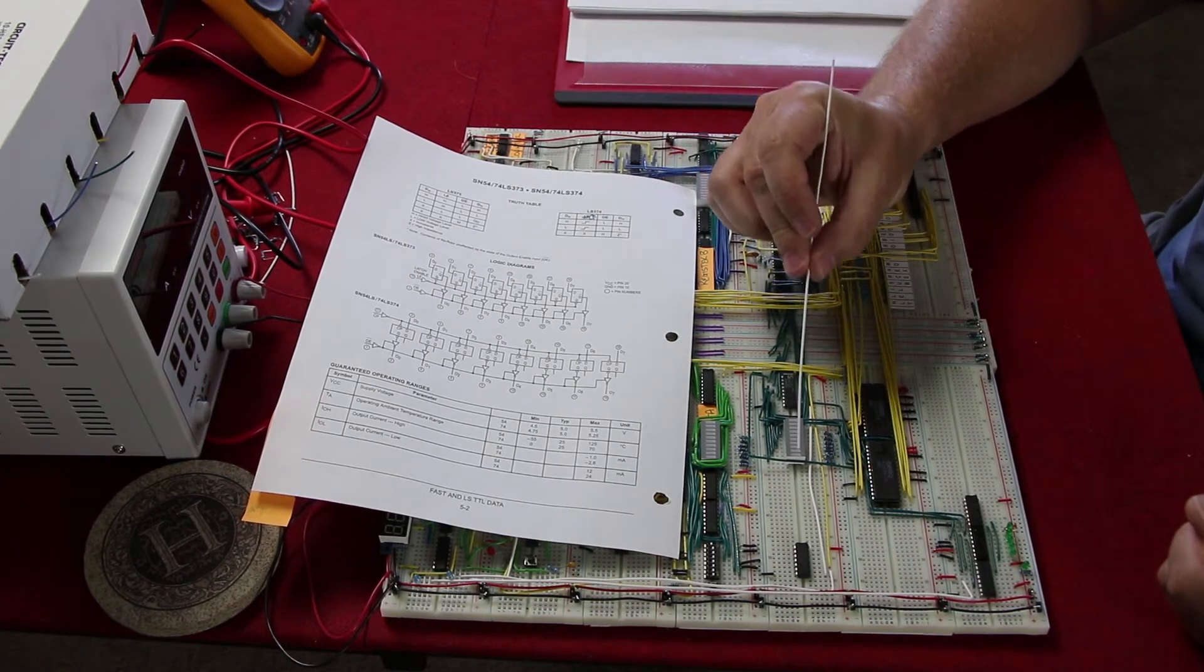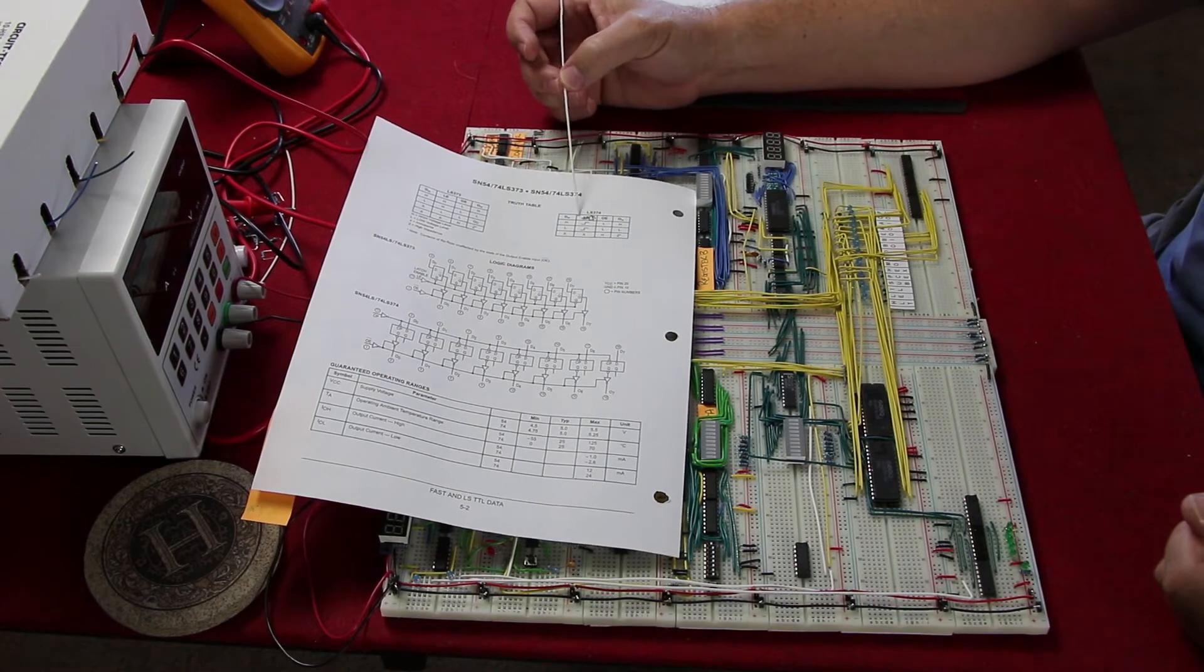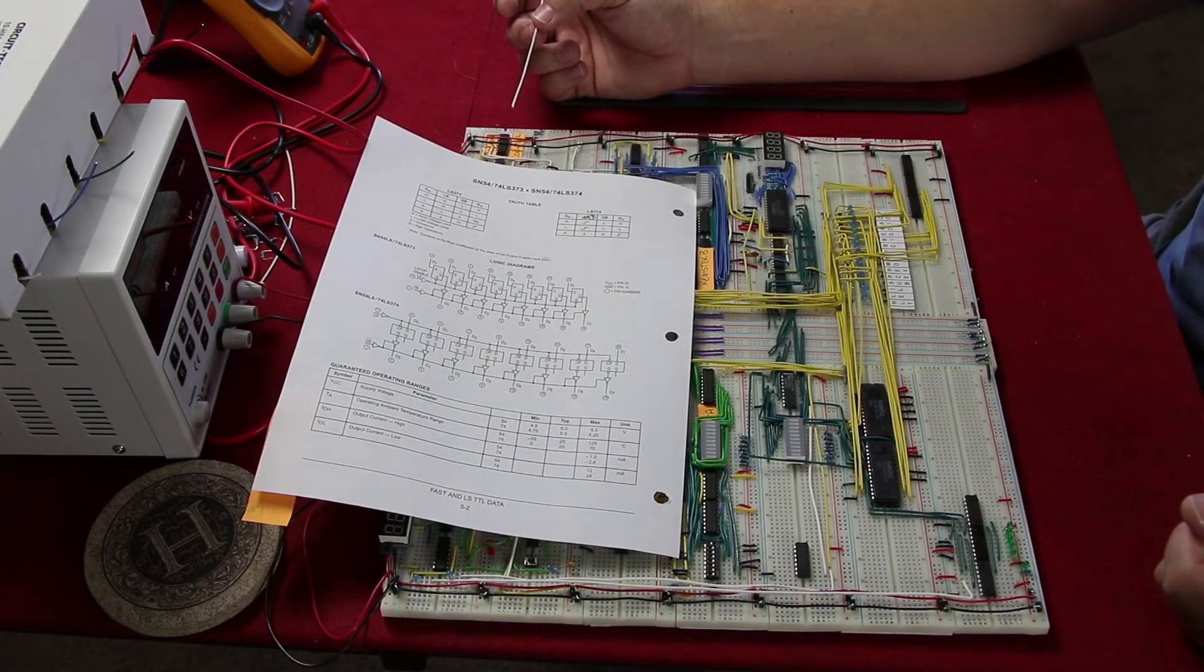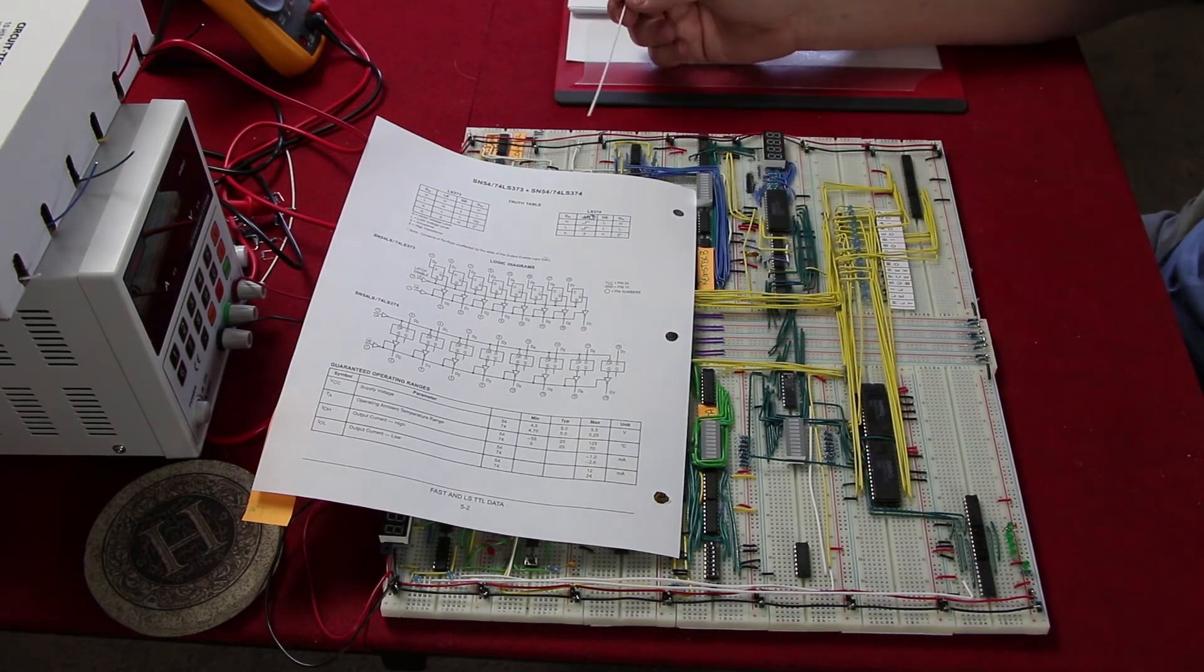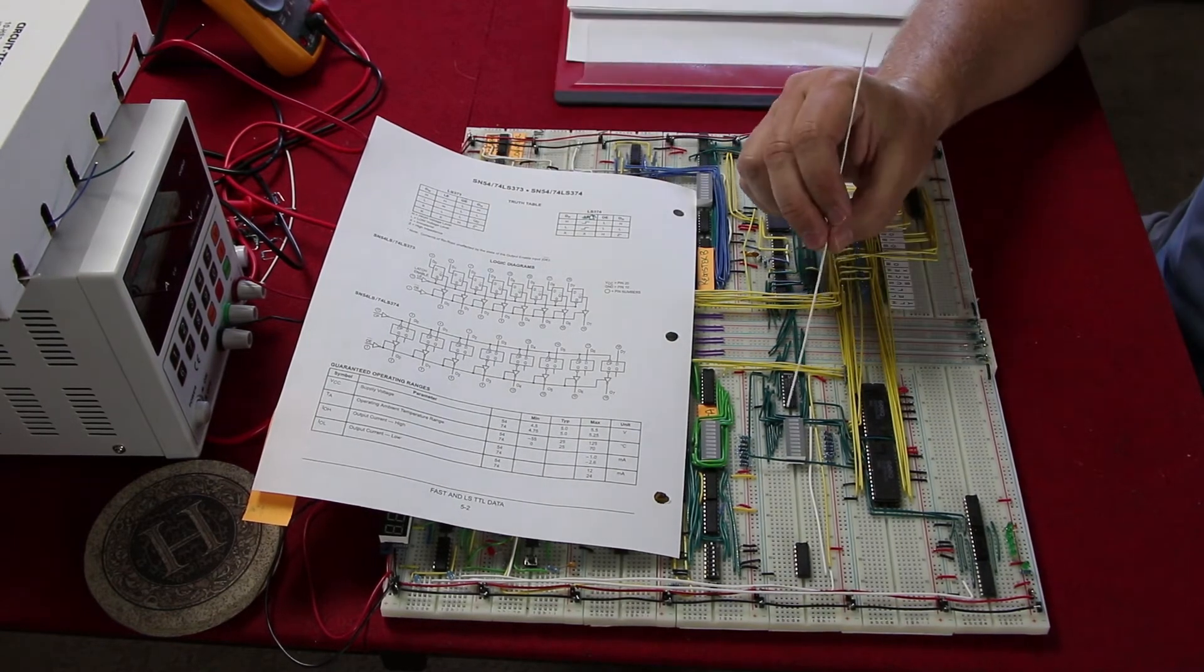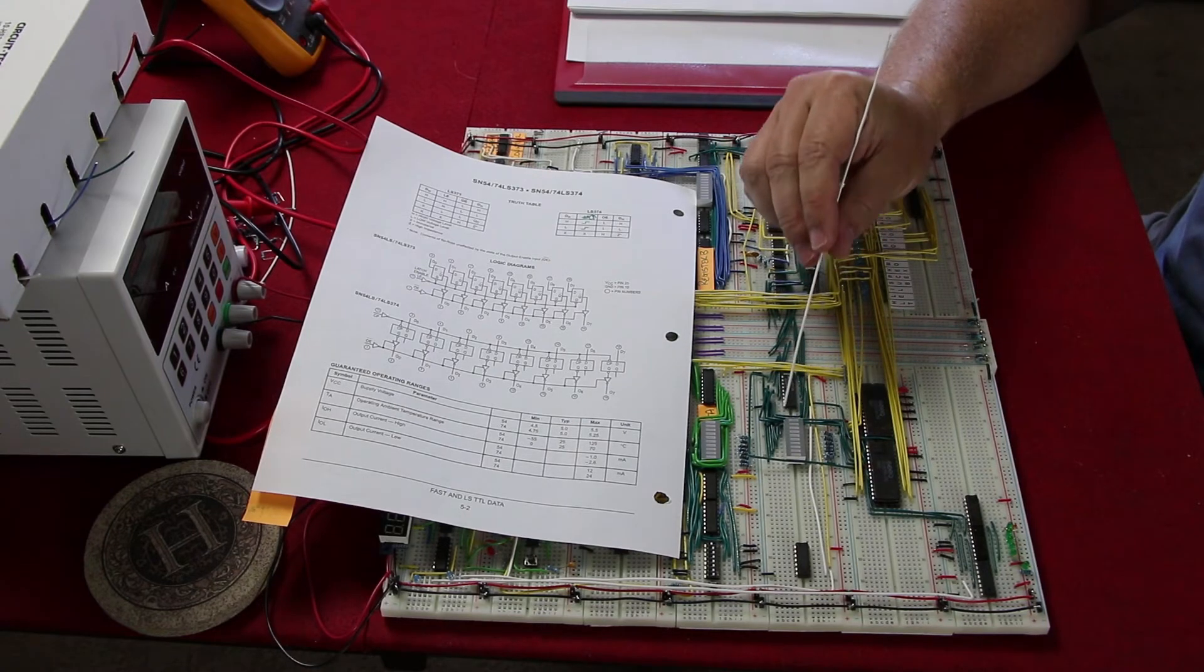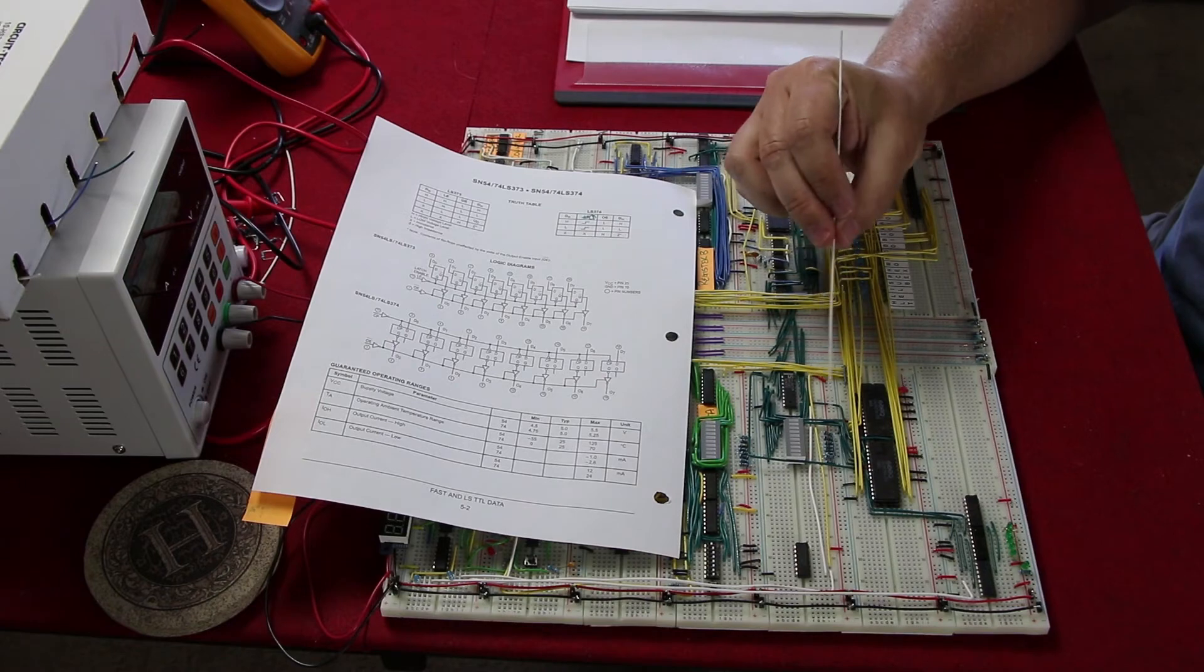We want to actually be able to see this for an extended period of time, so the 374 ends up not being an appropriate chip for our breadboard computer, where we want to see steady state information, not pulsed information. That's a little bit about the 373 and how I used it for the instruction register.